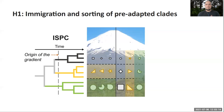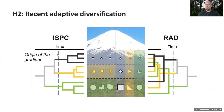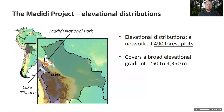On the other hand, the new environmental conditions can create opportunities for recent adaptive diversification, where clades that were already present in the region or that arrived after the uplift of mountains or the emergence of the new environmental conditions have a chance to evolve new adaptations to colonize and survive in these different environments.